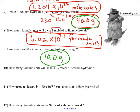Number 10, how many formula units will there be in a quarter mole of sodium hydroxide? A quarter of 6.02 times 10 to the 23 will yield your answer. So a quarter of 6.02 ends up being 1.50 times 10 to the 23 formula units.